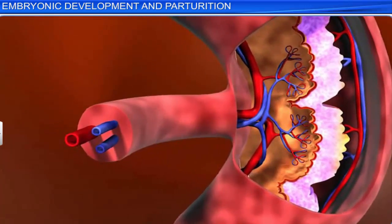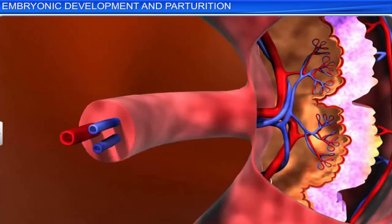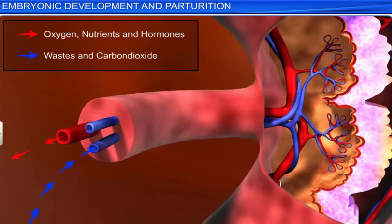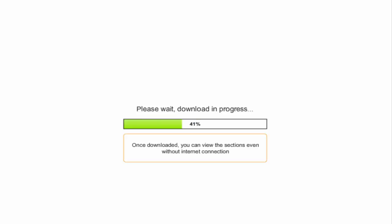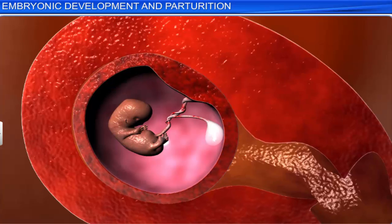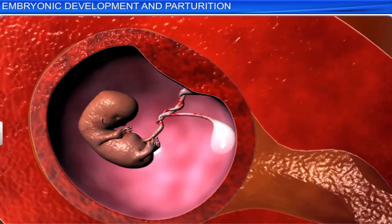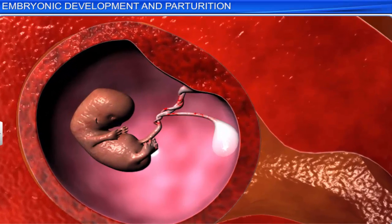The placenta is an important structure that supplies the embryo with oxygen, nutrients, and hormones, as well as carries waste products from the embryo back to the mother. The embryo stays inside the uterus for nine months, which is called the gestation period.